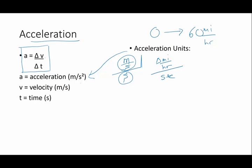Now, the squared seconds, where the heck does that come from? Well, that actually comes from the equation. If you've got meters per second, which is our velocity unit, divided by time units, seconds, you remember when you are dividing fractions, you invert and multiply.